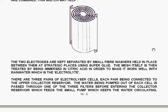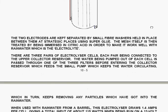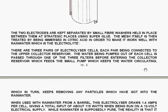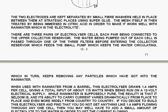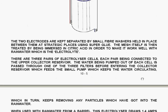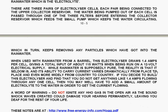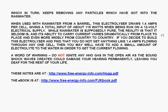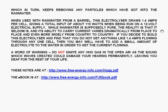There are three pairs of electrolyzer cells, each pair being connected to the upper collector reservoir. The water being pumped out of each cell is passed through one of the three filters before entering the collecting reservoir, which feeds the small pump which keeps the water circulating. Now there is also obviously a filter on each of the three pumps which keeps removing any particles which have got into the rainwater.